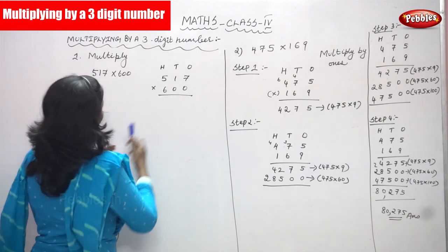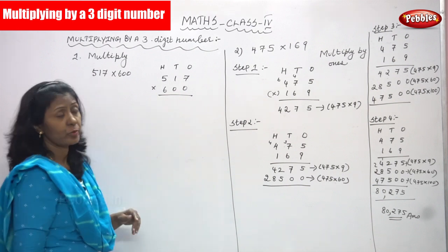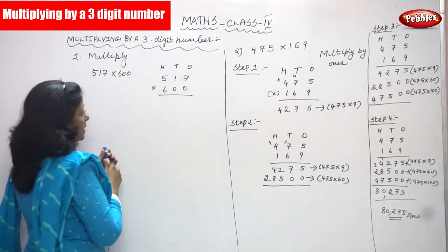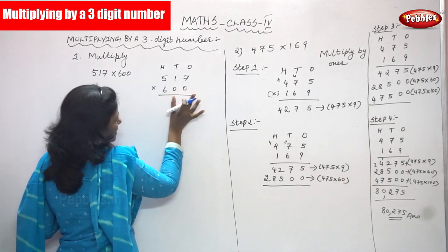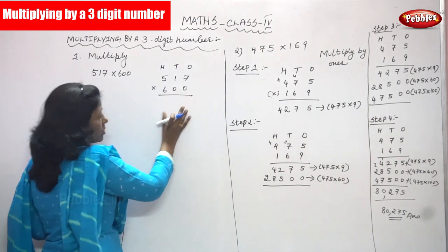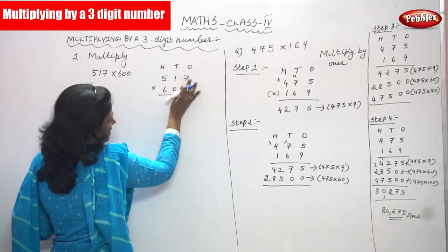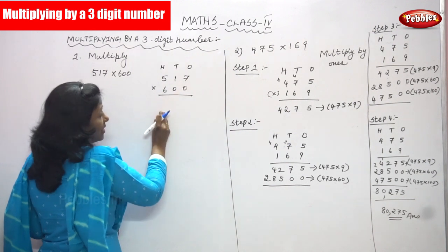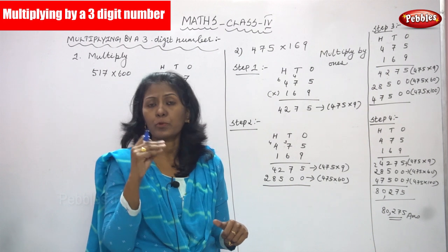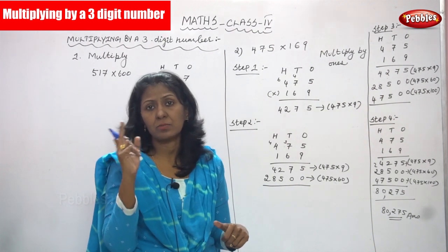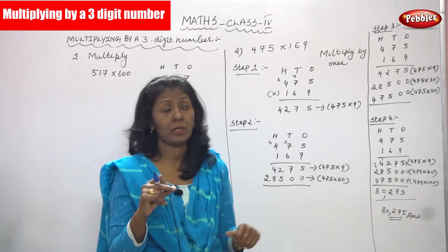Look at 517. Multiply by 600. I have told you already, if you have zeros, you should not consider the zeros. First, you have to multiply only the numbers. Then finally, how many zeros are present in the digit? One digit means one zero. Suppose two digits means you have two zeros.